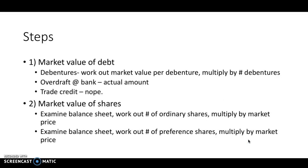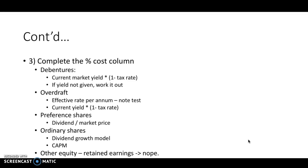So there's a few steps to working out a market value of weighted cost of capital. We start with the market value of debt. If there's debentures there, work out the market value per debenture and multiply by the number of debentures. Overdraft comes into that, the actual amount. Don't put trade credit in here, that's not considered a cost of capital. We need to work out the market value of shares. Look at the balance sheet, work out the number of ordinary shares and multiply it by market price, and also work out the number of preference shares and multiply that by their market price.